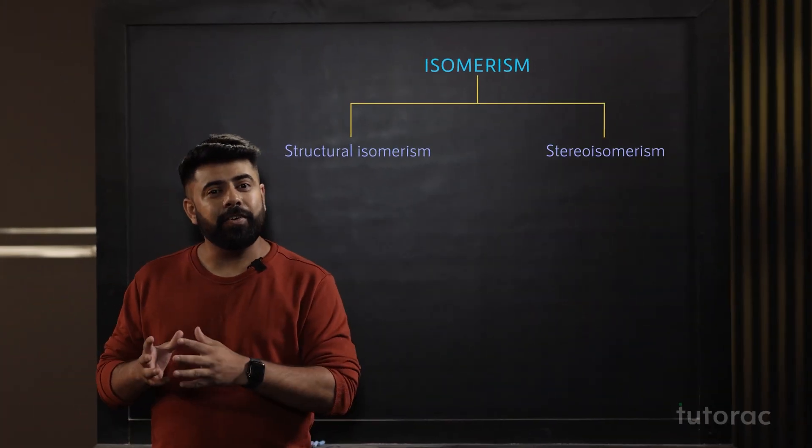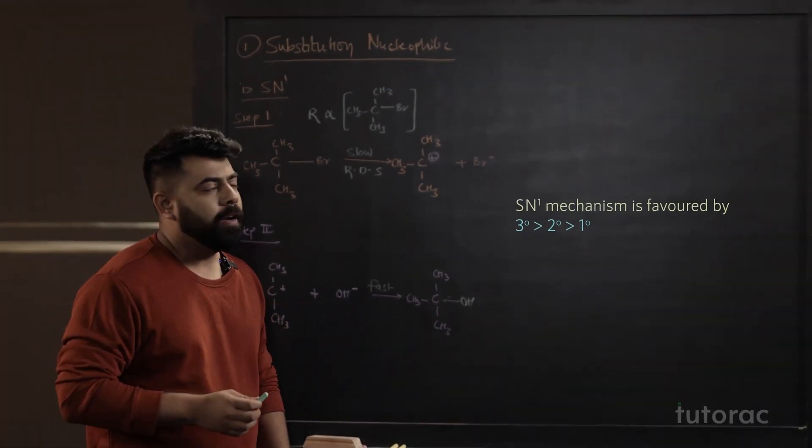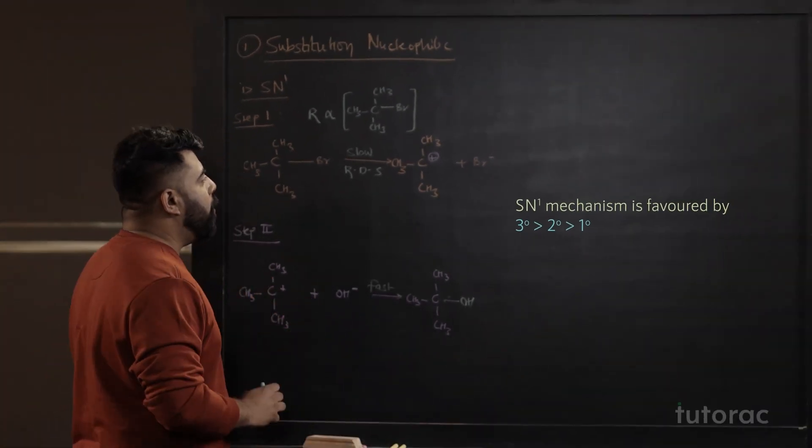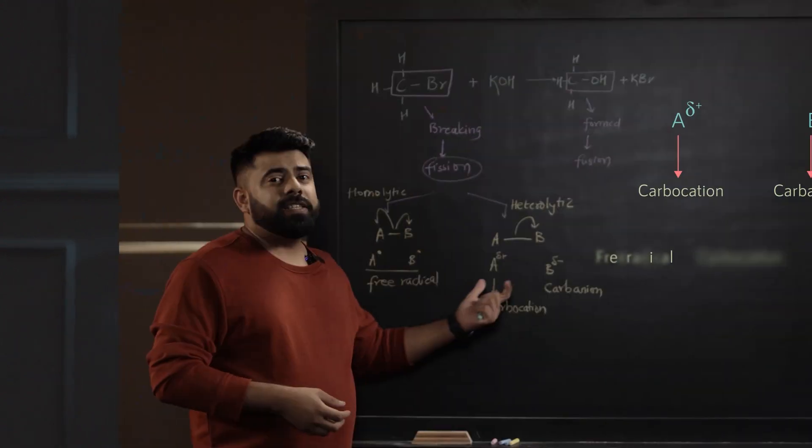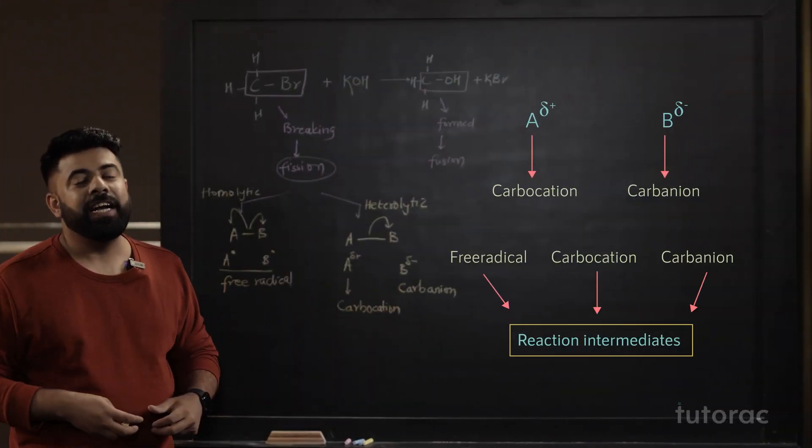Herein, we will also learn about different reactions and their mechanisms. But in between the reactants and products, we will learn about the reaction intermediates that are formed. We will also learn about the stability of these reaction intermediates using some effects like inductive effect, the resonance effect, and hyperconjugation.